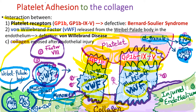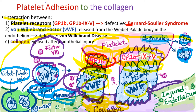When von Willebrand factors are used for platelet adhesion and the platelets are subsequently activated, factor VIII is detached from von Willebrand factor and used immediately for the coagulation cascade to form fibrin strands during secondary hemostasis. When GP1b is deficient, it causes Bernard-Soulier syndrome, a rare congenital bleeding disorder, and patients have bleeding problems such as frequent nosebleeds due to platelet dysfunction.